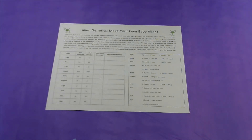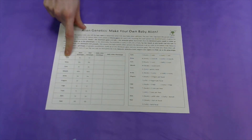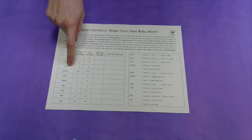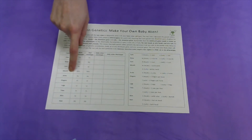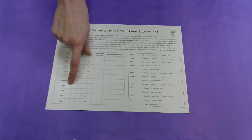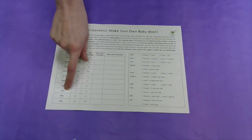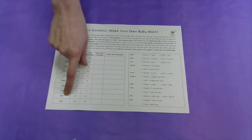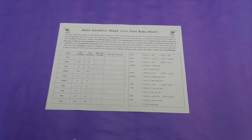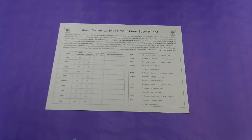Let's take a look at the different traits we are flipping for for our baby aliens today: eyes, nose, ears, mouth, arms, fingers, legs, toes, skin, and hair. That's ten different characteristics that we are going to be flipping for. Remember, we're flipping two coins — one to represent papa alien and one to represent mama alien — for each of the below traits.